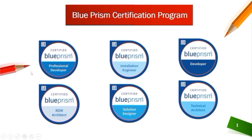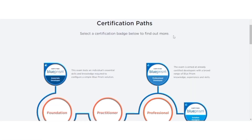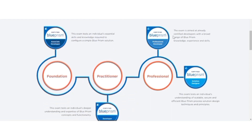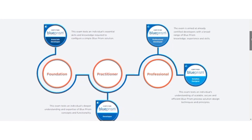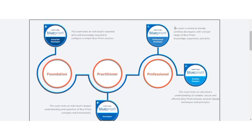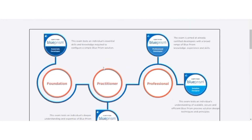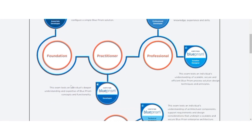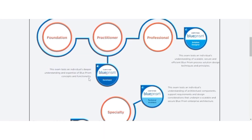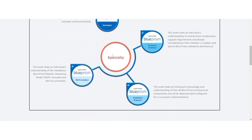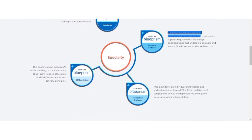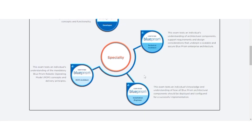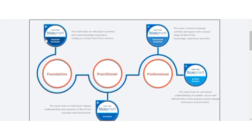Blue Prism divides certifications into four categories: first is Foundation, second is Practitioner, third is Professional, and last is Specialist. For Foundation we have Associate Developer, for Practitioner we have Developer, for Professional we have Professional Developer and Solution Designer, and for Specialist we have Blue Prism Technical Architect, ROM Architect, and Installation Engineer.